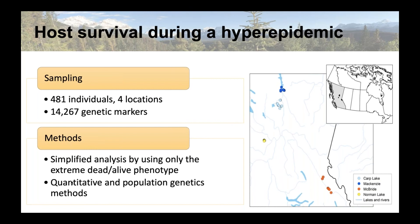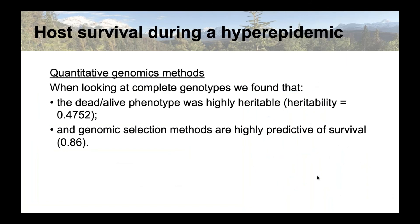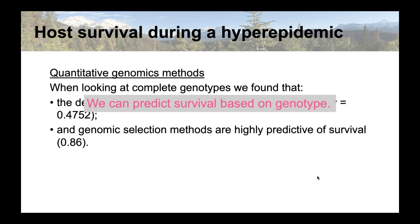The sampling locations are all fairly tight there in central BC, all within what we'd call the historic range for mountain pine beetle. Using a quantitative genomics approach, we found that the phenotype of dead or alive was really highly heritable — 0.4 — which is the same amount of heritability previously found for the chemical defenses. That corroborates prior findings for this population. We also found that our genomic selection methods were really highly predictive of survival, meaning we can predict survival based on genotype.